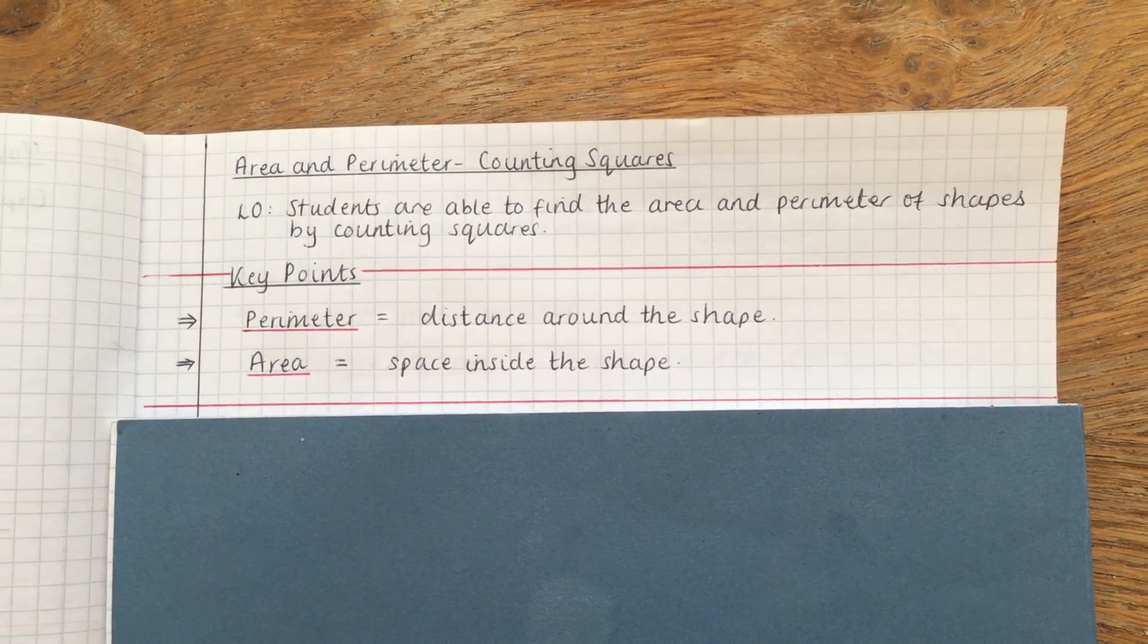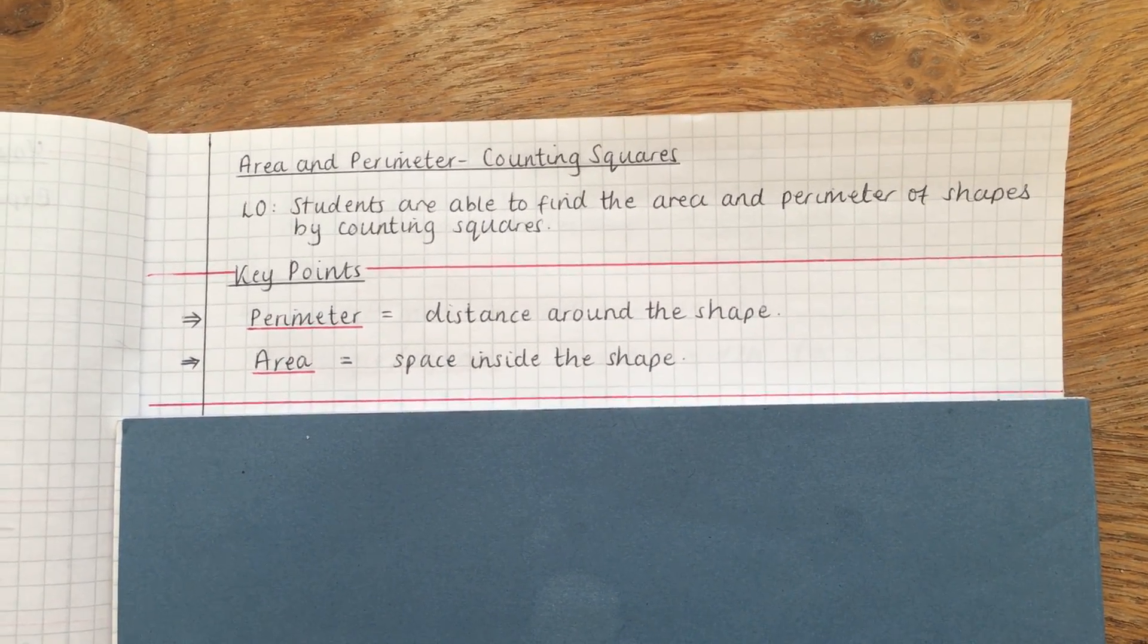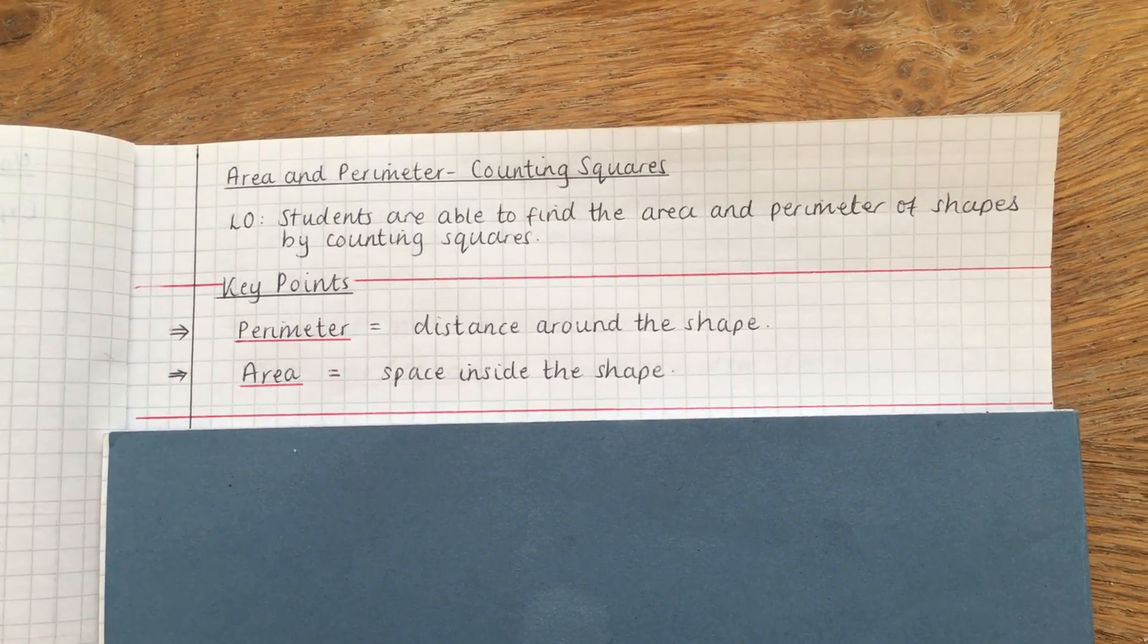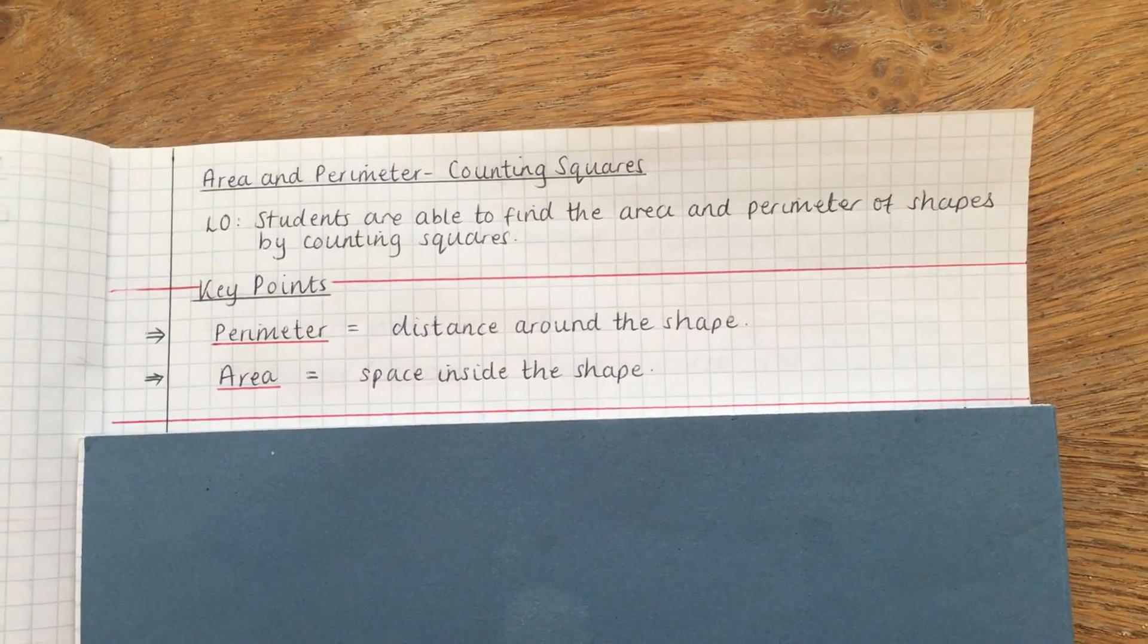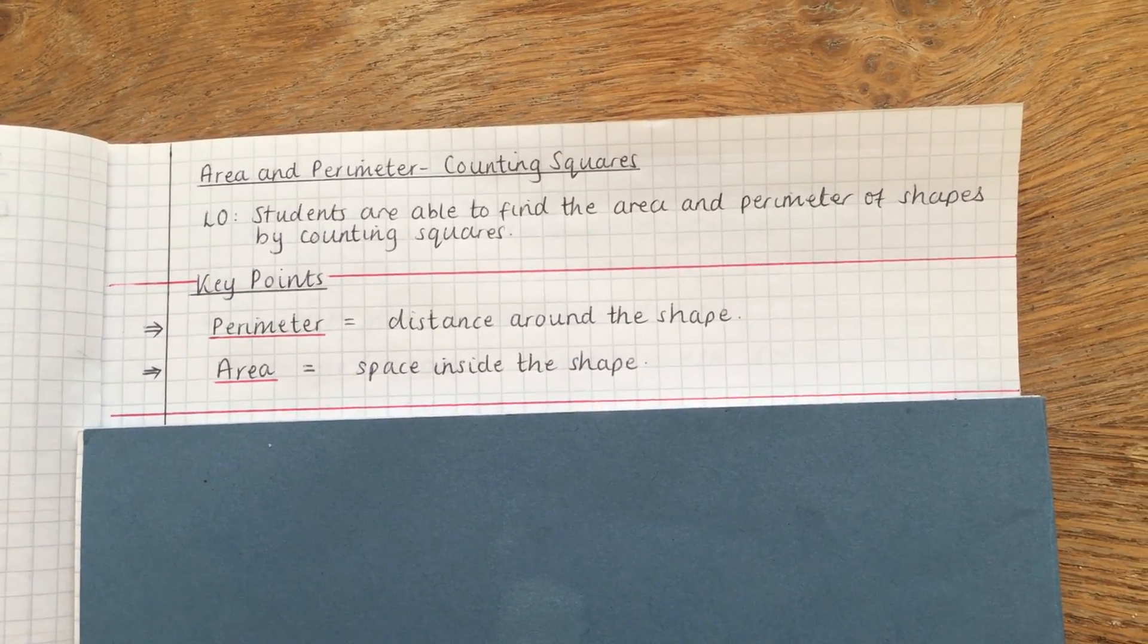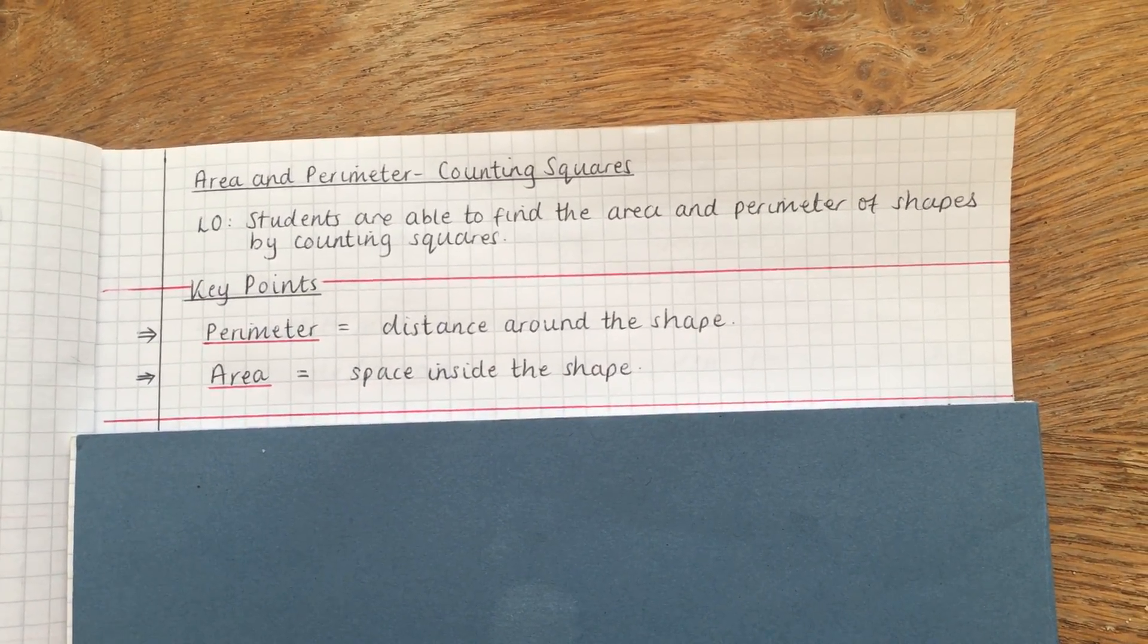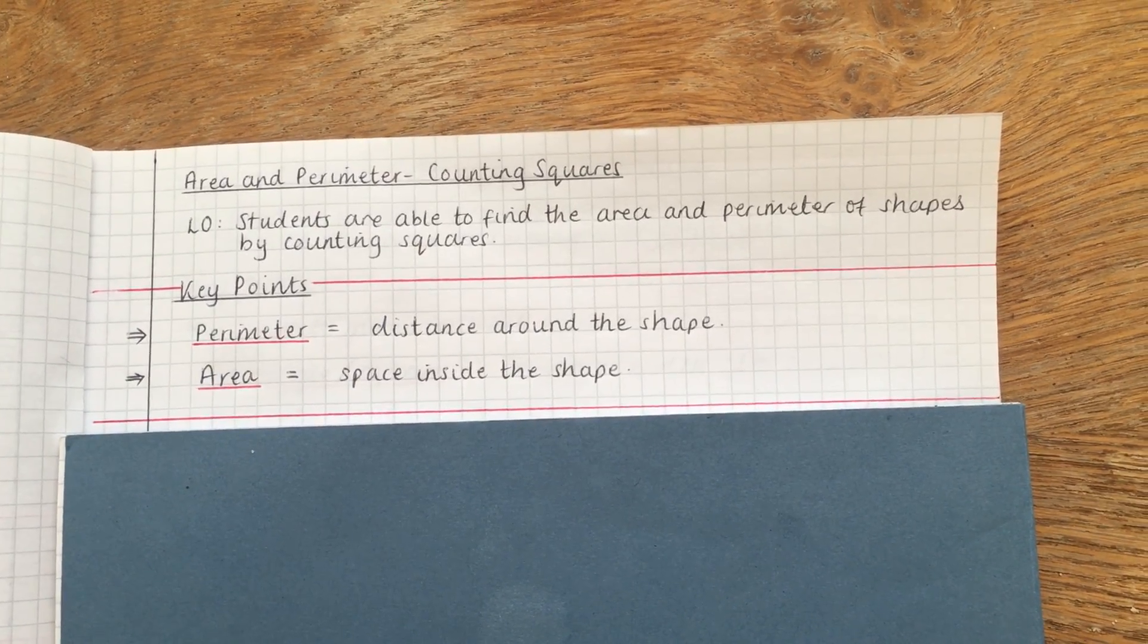Okay, so in this video we're going to be looking at how you find the area and perimeter of shapes, and the particular method we're going to use is counting squares. Now this is something that sounds simple but people make silly mistakes on all the time, so we wanted to make a video on this to make sure that everyone understands.